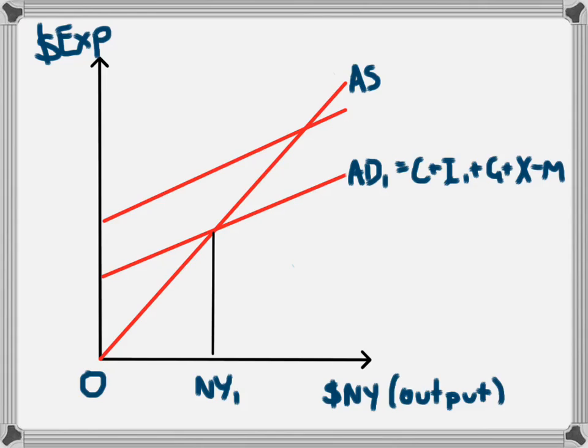Investment increases in this model by this much, creating a new level of aggregate demand. The new aggregate demand level results from investment increasing from I₁ to I₂ due to the lower interest rate.